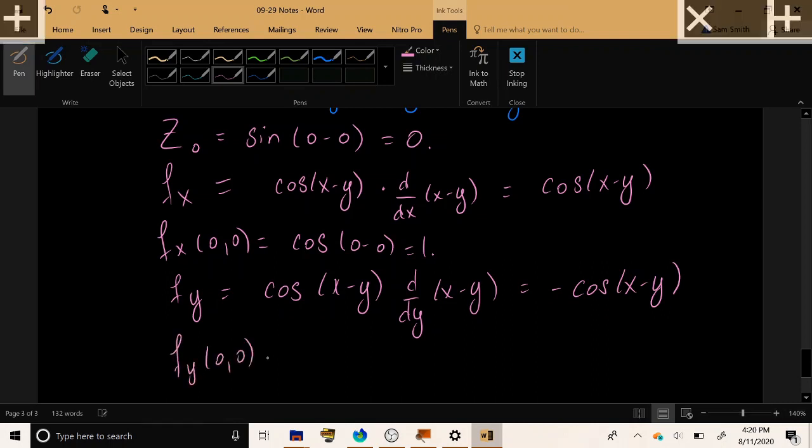Plug in 0, 0, and we have negative cosine, 0 minus 0 equals negative 1.